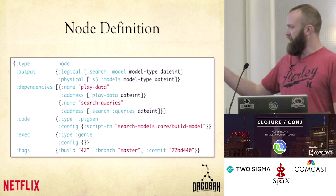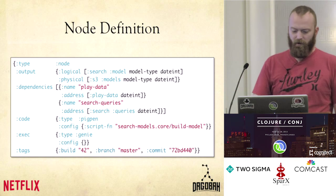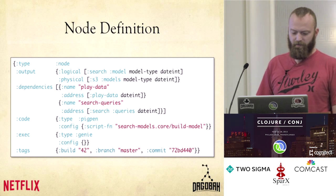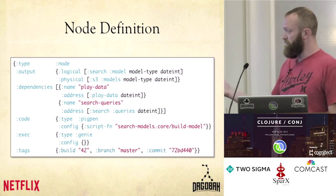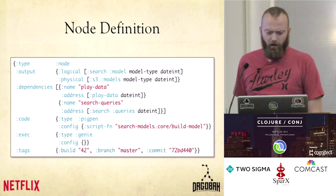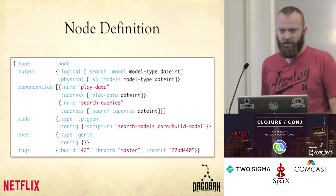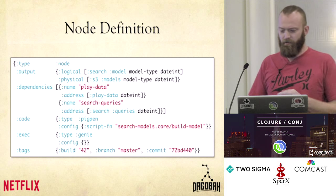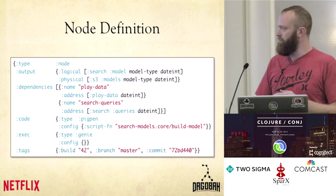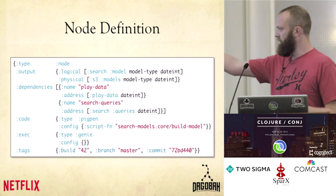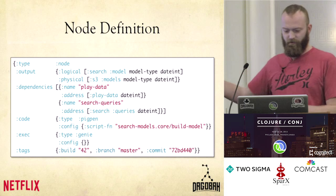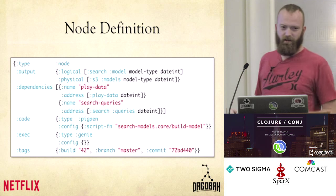Lastly, we have tags. Tags are applied by the build process — you don't actually specify this when you're writing one of these, but it ends up looking like this once it gets built. We use Stash, but any sort of Git repo would work. So we have a build number, a branch, and then the SHA from the commit — not just the abbreviated one, but those are hard to fit on slides.